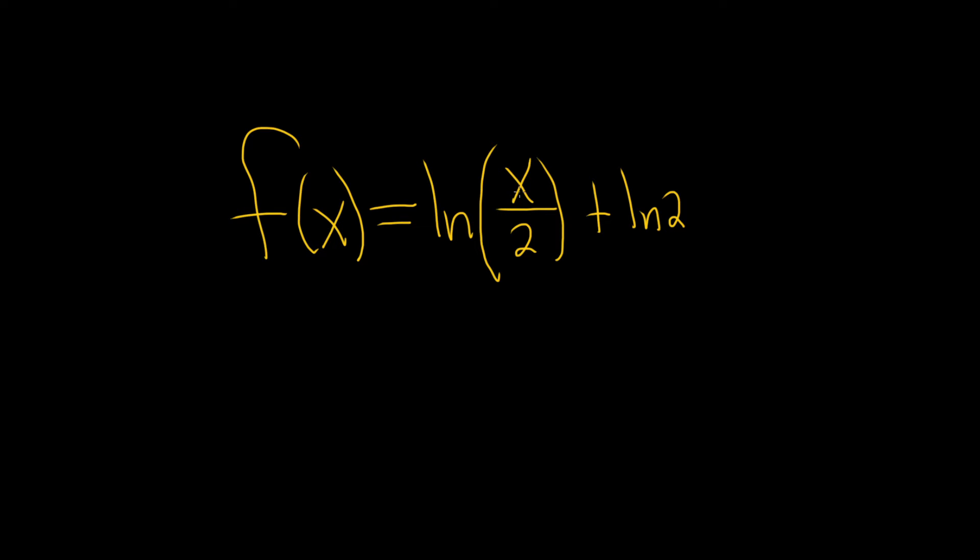We have the natural log of x over 2. The formula for that is whenever you have a over b with a natural log, the fraction turns into subtraction. So this is the natural log of a minus the natural log of b.